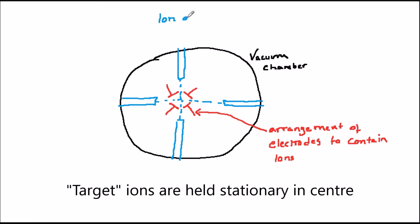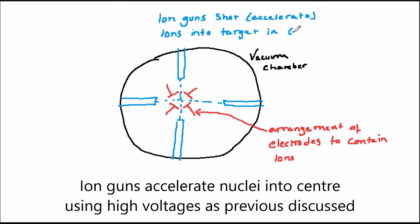This used a series of electrostatically charged electrodes to hold the ions in place. Another stream of ions was then fired into this with ion guns placed around the periphery of the machine.